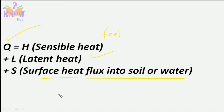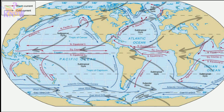In water, absorption of heat is greater near the equator and less at higher latitudes. This gives us a temperature gradient — a difference in temperature — and because of this difference in temperature, we get ocean currents. That's all for now.